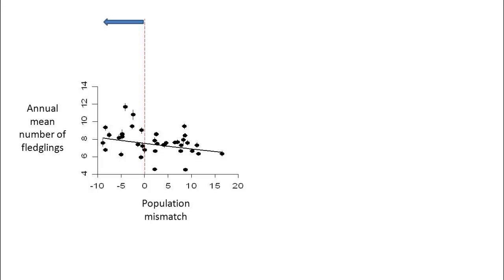Points to the left of the zero line indicate years where breeding was on average earlier than the food peak, while points to the right indicate years where breeding was late relative to the food peak. The negative linear relationship here was weak, although statistically significant.